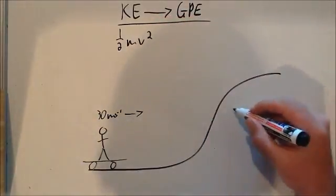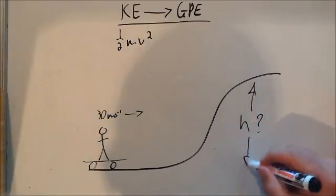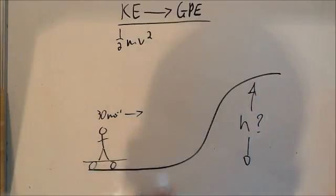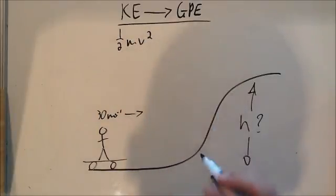We want to figure out how high up this hill he's going to move, so he's freewheeling along at 30 metres per second and obviously he's going to slow down as he moves up, converting this kinetic energy into gravitational potential energy.